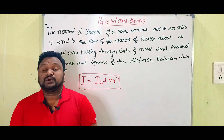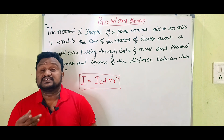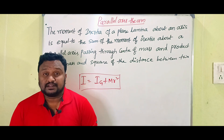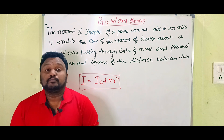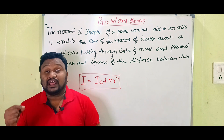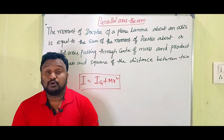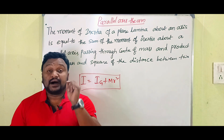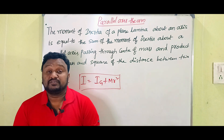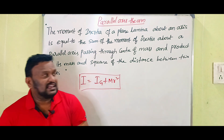In this video we are discussing one of the most important short answer questions in the chapter of System of Particles and Rotatory Motion — the Parallel Axis Theorem. The statement of the parallel axis theorem: the moment of inertia of a plane lamina about an axis is equal to the sum of the moment of inertia about a parallel axis passing through the center of mass, and the product of the mass of the body and the square of the distance between the two axes.